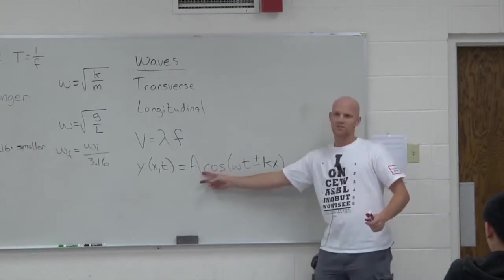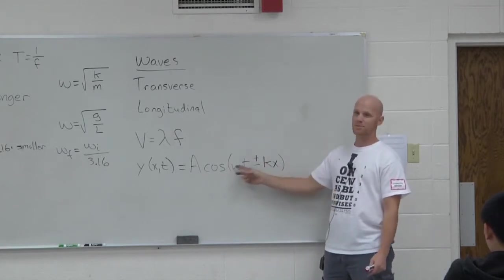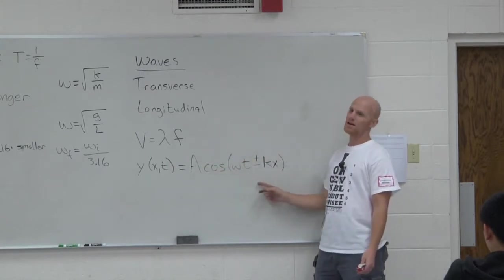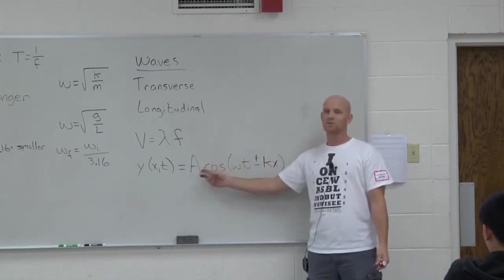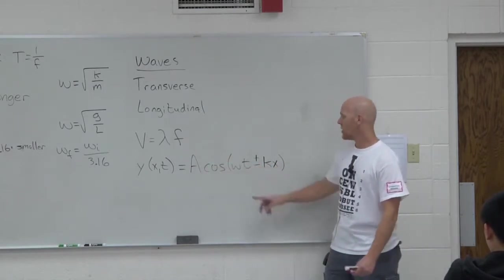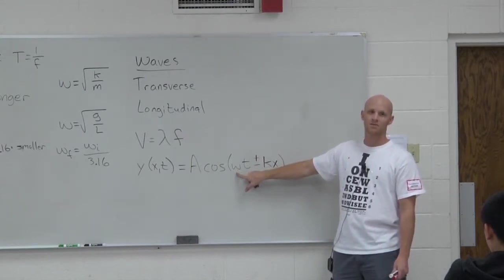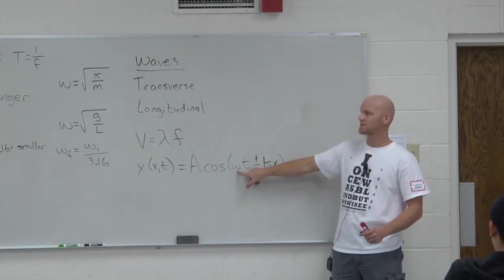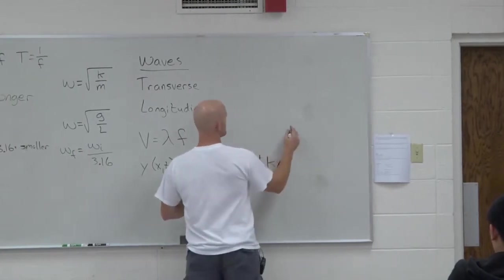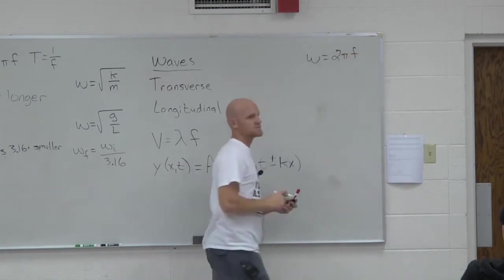A hasn't changed its meaning. What's A called? Amplitude. Cosine function still has maximums and minimums of 1 and negative 1, so the biggest this function could ever be is A and the smallest it could ever be is negative A. A is still called the amplitude, that hasn't changed. Omega also still hasn't changed. What's omega? Angular frequency. In this case, what's it equal to? Same thing it was equal to just a little bit ago. 2π f.